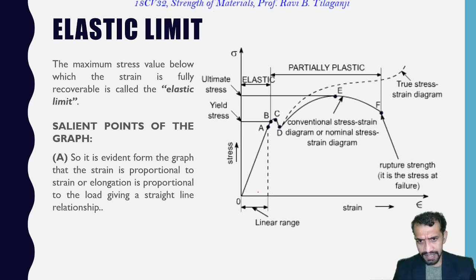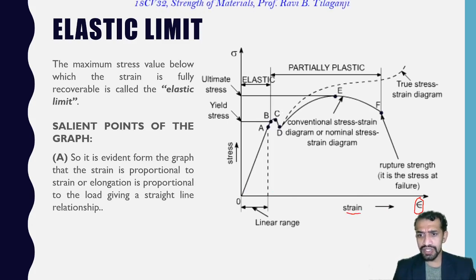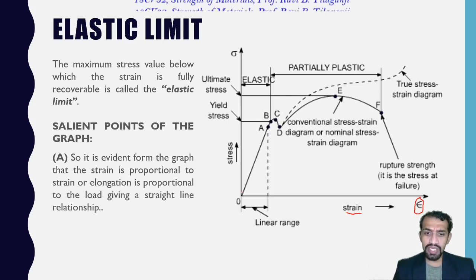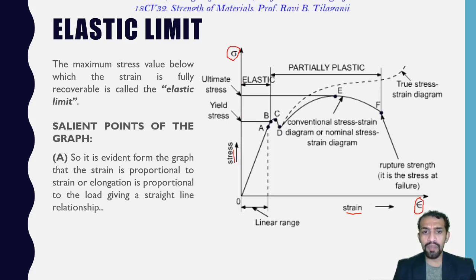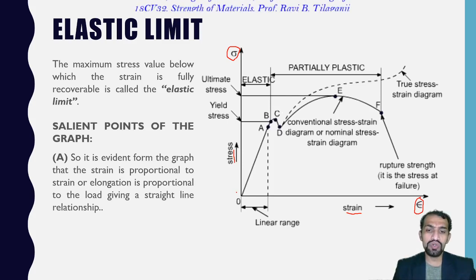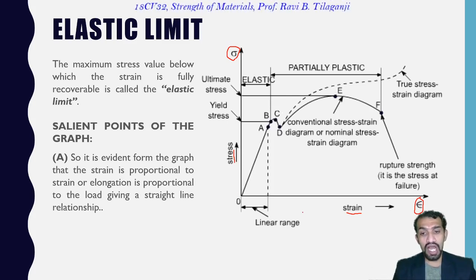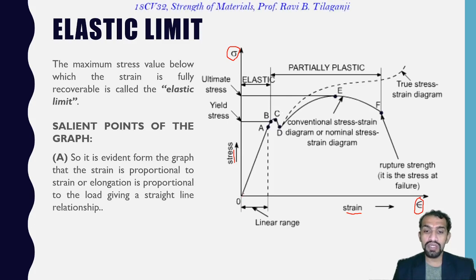The horizontal axis is taken as epsilon — we call it strain, which is change in length upon original length. The vertical axis, perpendicular to the horizontal, is sigma — known as stress, which is the resistance of the material to the load acting on it. When we plot this graph of stress versus strain, we get a somewhat linear deformation line.